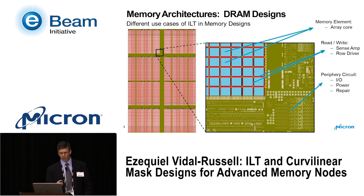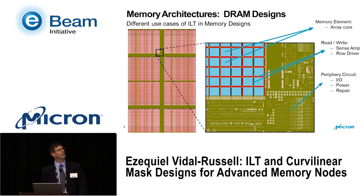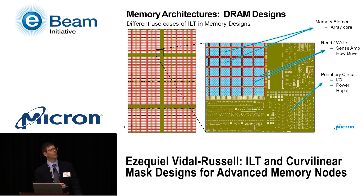What you see on the left-hand side of the screen is a top-down view of an advanced memory design chip — state-of-the-art DRAM. If you look at the zoomed-in corner, you can see the three main areas we distinguish in a memory chip. The blue squares represent where the memory elements are — where we store the information, the bits. We typically call that the array core or the memory array core.